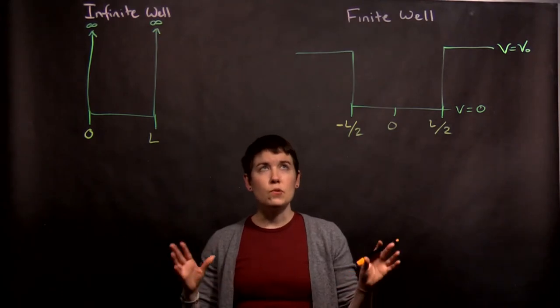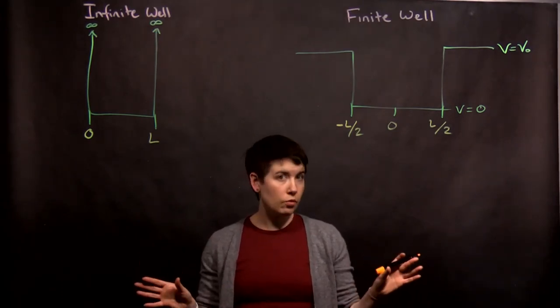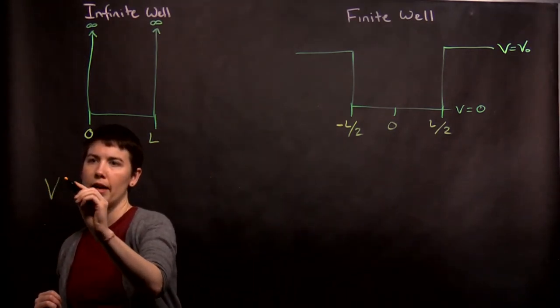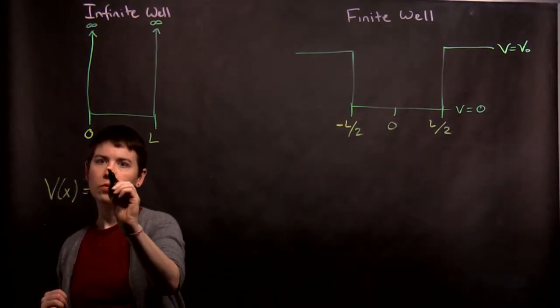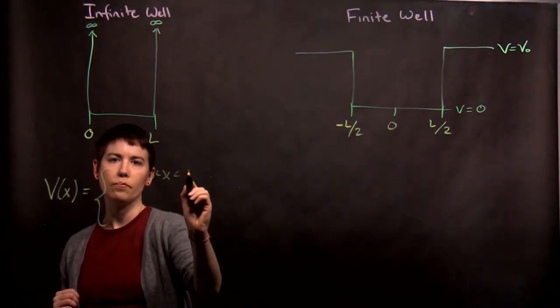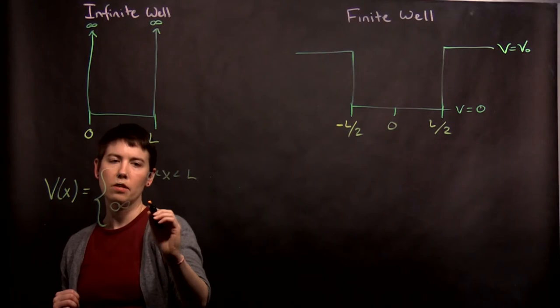So this is our starting point. We have two different potentials. And so we would write this, for instance, as V(x) equals zero when x is between zero and L and infinite otherwise.